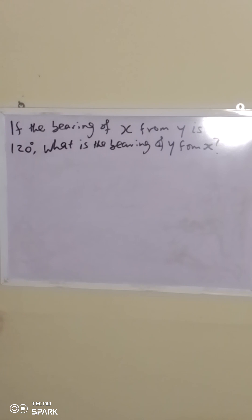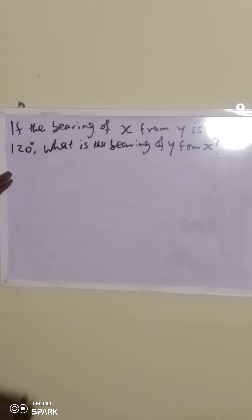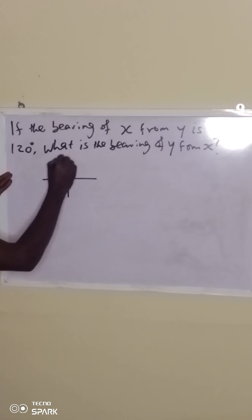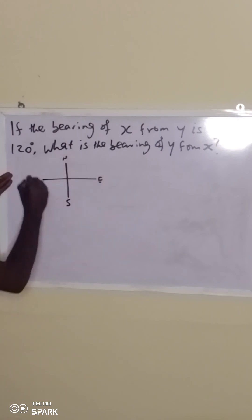The bearing of x from y is 120 degrees. So now, first of all, that means you have to locate where point y is. We have our four cardinal points: the north, the east, the south, and the west.